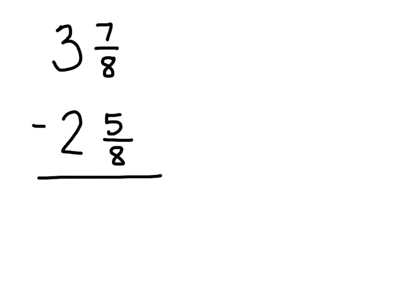So here we have an example of 3 and 7 eighths minus 2 and 5 eighths. We're going to get in the practice of always subtracting our fractions first and then our whole numbers, because as we get into some more tricky problems we want to make sure that we're solving them accurately and it always helps to subtract our fractions first.